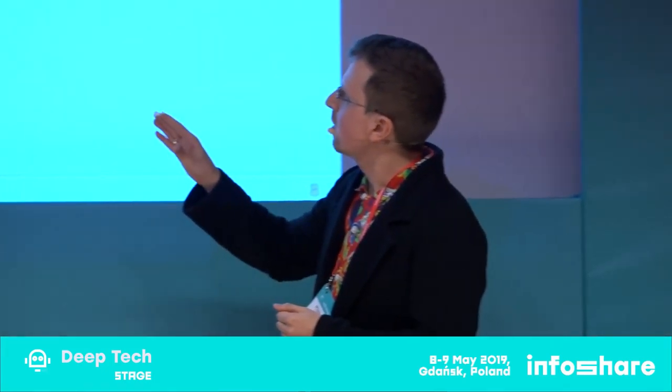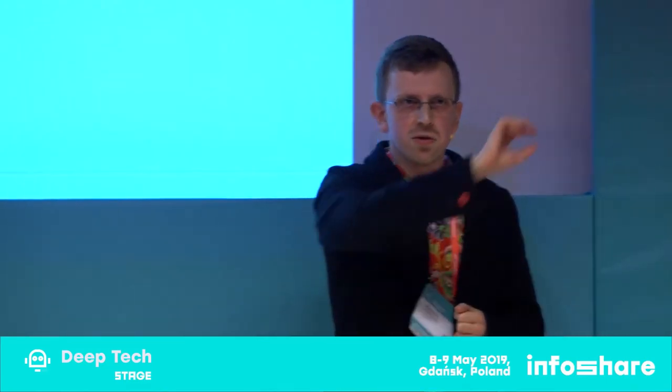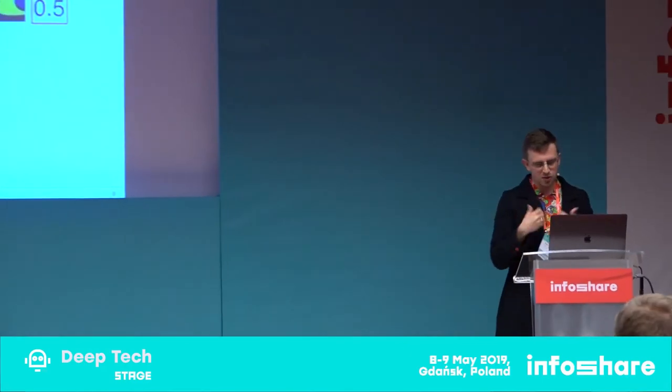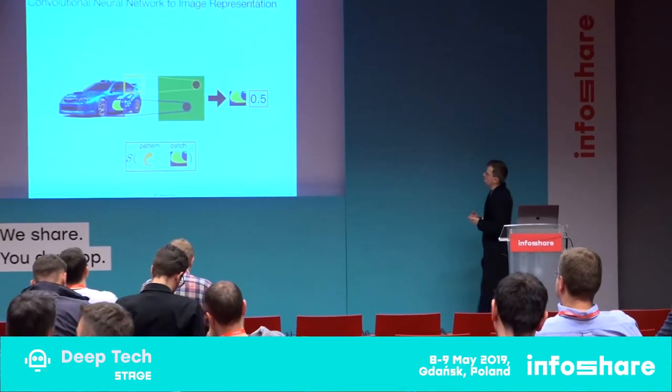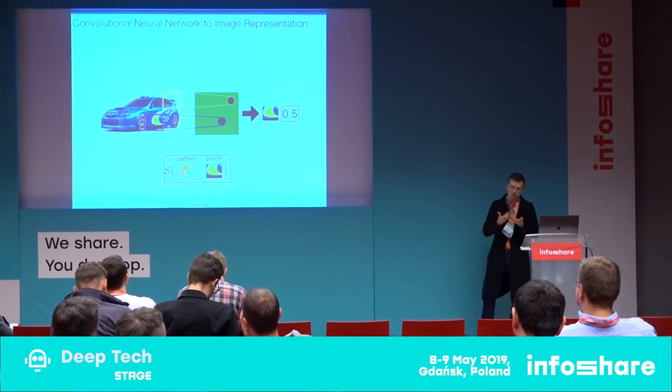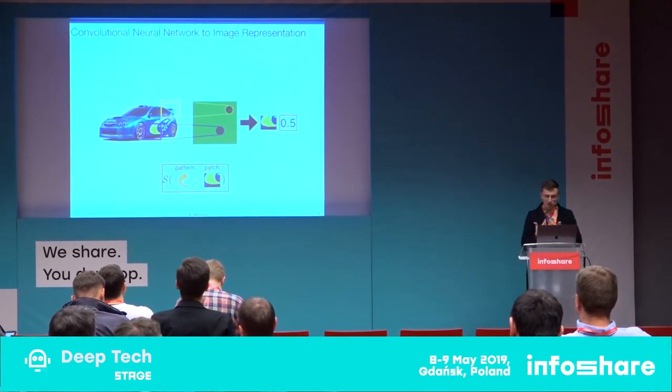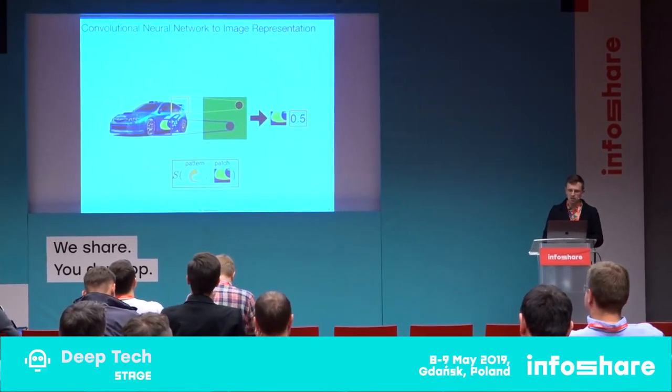The key property is that the convolutional kernel searches for this pattern over the whole image, which means we can expect features like a car wheel here or maybe over there — it's the same with other objects like faces. There's no single particular position where a pattern or feature must fire in the image.